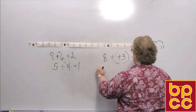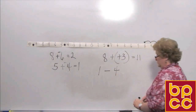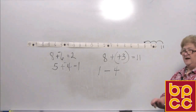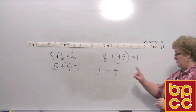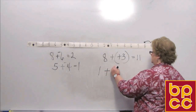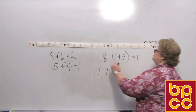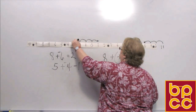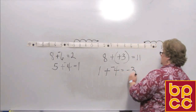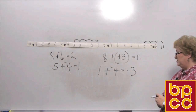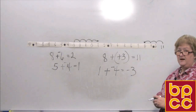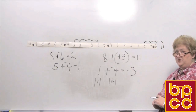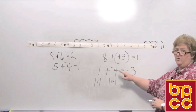Let's do 1 minus 4. When I see the subtract sign, I'm going to change the sign to addition and make that 4 its additive inverse — so this really says 1 plus a negative 4. I'm going to go to positive 1 and add 4 in the negative direction: 1, 2, 3, 4. And my answer is going to be a negative 3. You can also reason that it's negative because you have more negative than positive — the absolute value of 1 versus absolute value of 4, the difference is 3, and it's negative 3.